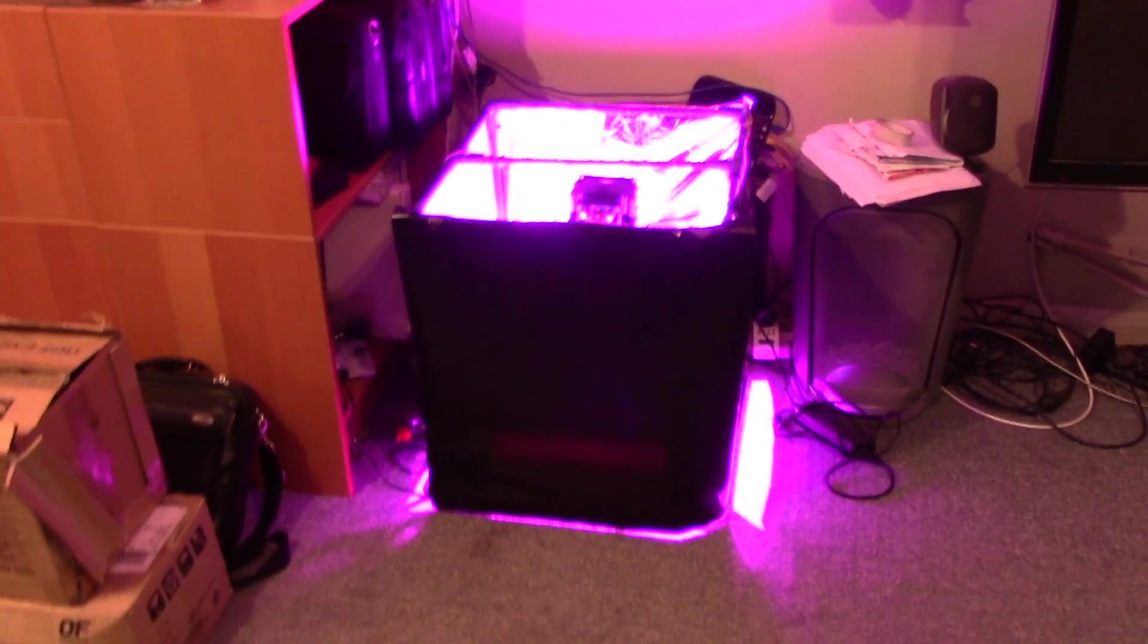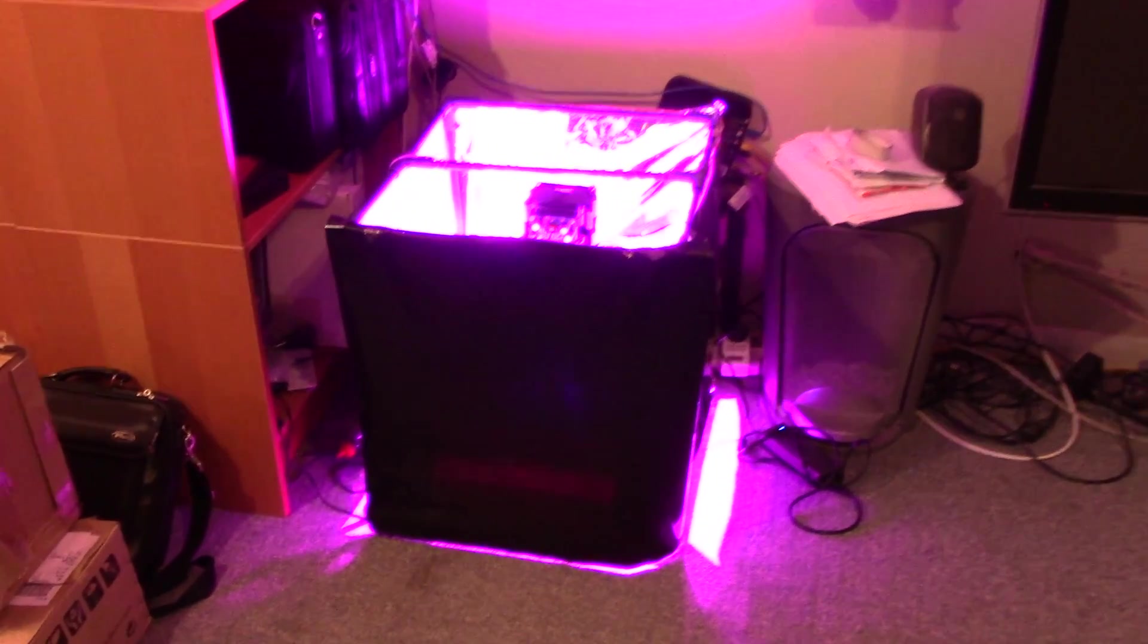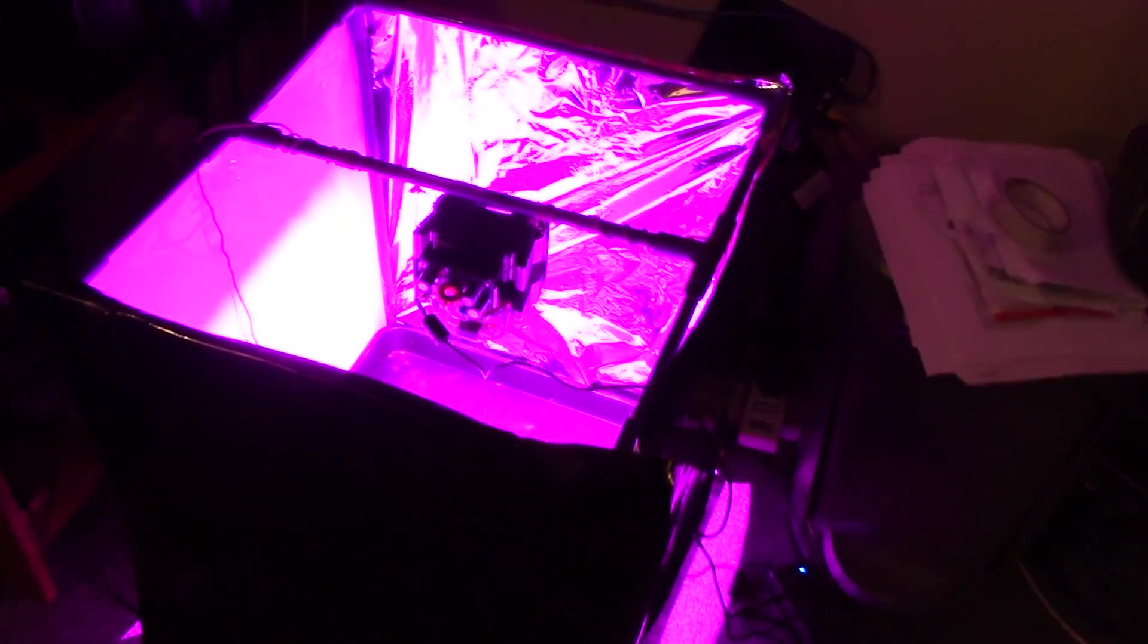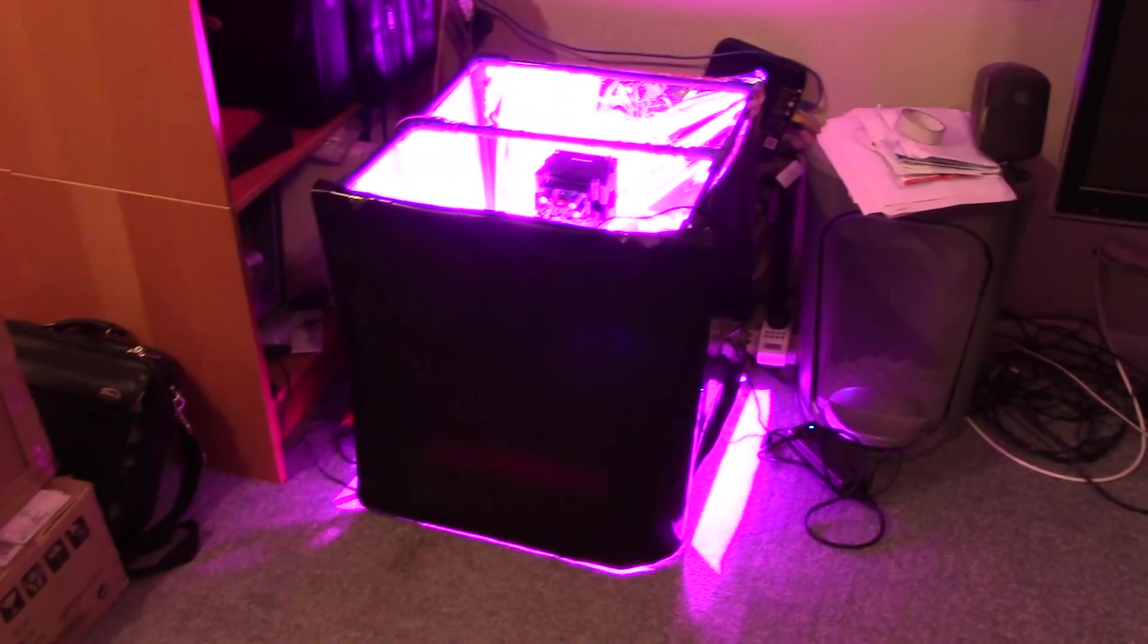So I hope you enjoyed all that folks. That was my how to build a seven color multi-band LED grow light for about £70. So yeah, cheers folks. See you next time.